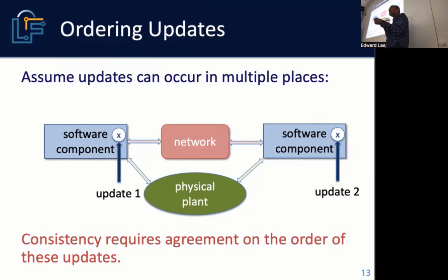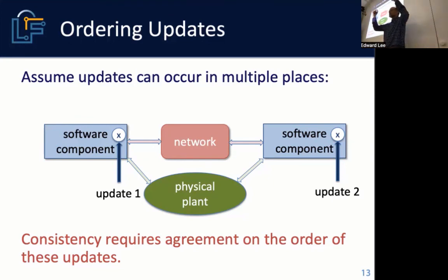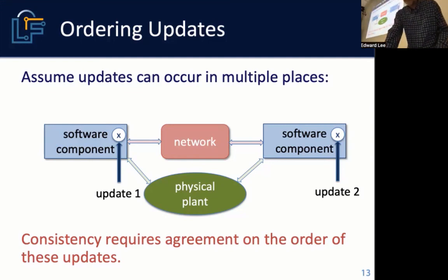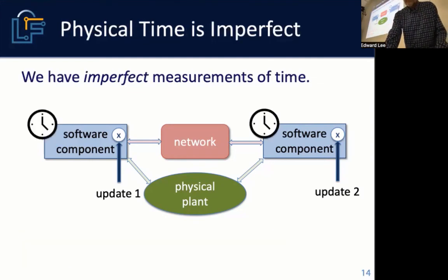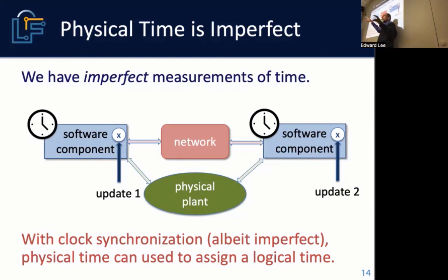In the database community this is called eventual consistency: if you have a sequence of updates to a variable and then the updates stop, all components will agree on the final value. All that requires is agreement on the order of updates. You do this with imperfect measurements of time, but if you have some form of clock synchronization you can use physical time to timestamp the updates, and then use the numerical value of those timestamps to define the order.